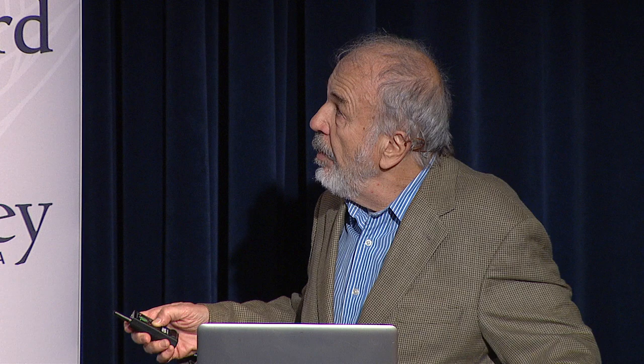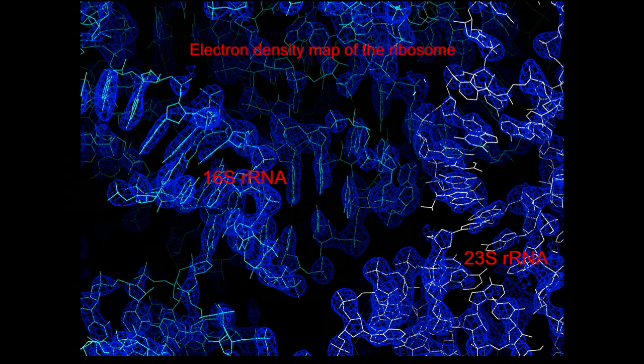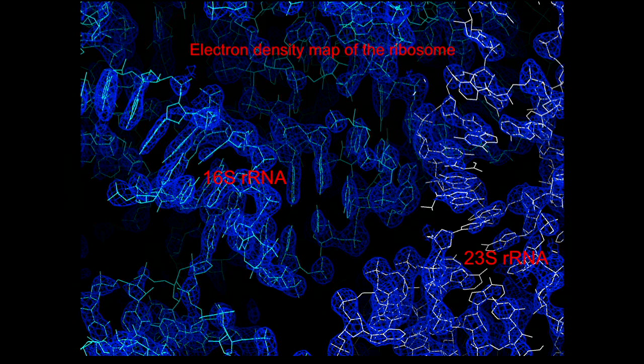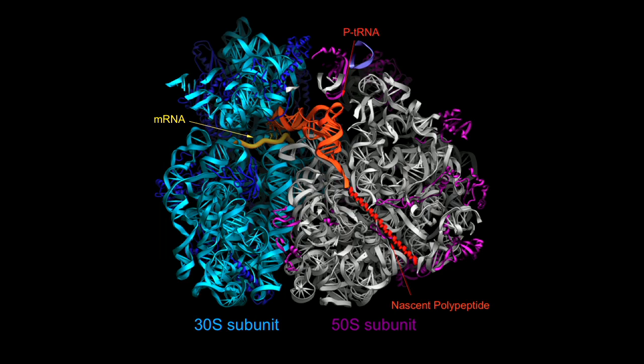This is inside the ribosome — elements of the 16S and 23S RNAs. The blue outline is the electron density, and the white shows the fitting of the atomic model to the ribosome. This is a cross-section of the ribosome showing the two ribosomal subunits in blue and gray. On the left you see the messenger RNA wrapping around the neck of the small subunit, and in orange is the tRNA reading the codon.